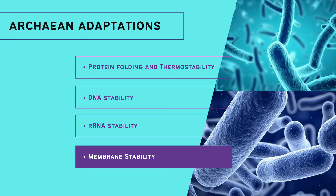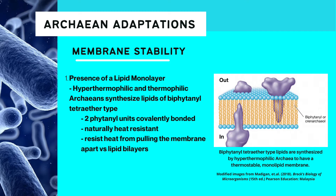The last adaptation is on membrane stability. Hyperthermophilic and thermophilic archaeans synthesize phytanyl-tetraether type lipids which comprise their cell membranes. The biphytanol side chains on the cell structures are covalently linked, resulting in a lipid monolayer. This structure resists heat from pulling apart and destroying the membrane. Through these adaptations, the upper limit of life is further pushed by hyperthermophilic organisms. It is predicted that there are still more organisms more hyperthermophilic than Metanopyrus that are yet to be isolated.